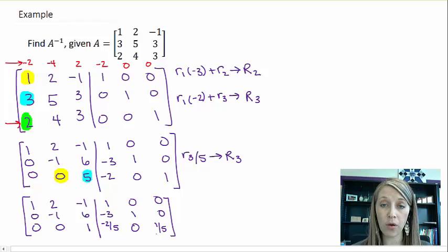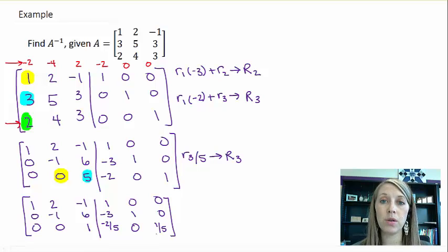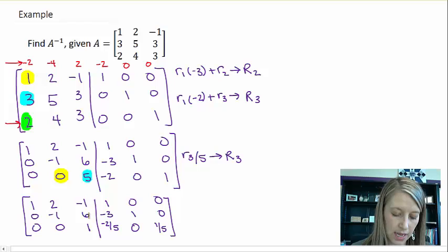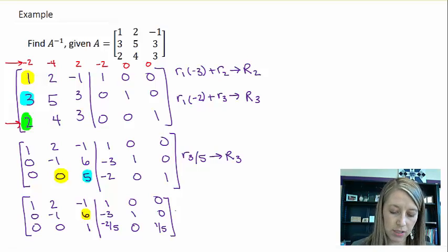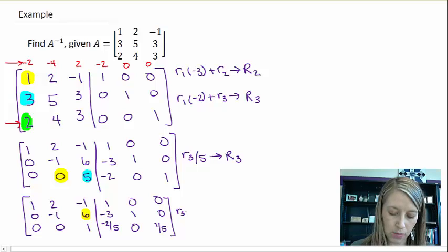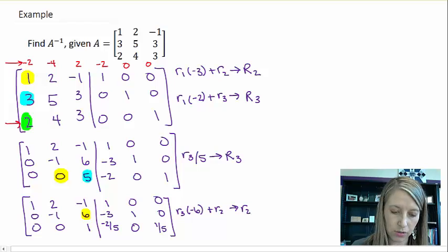And again, I get fractions, but unfortunately that is unavoidable. A lot of times when we do inverse matrices, we have fractions in our answer. The next thing that I want to do is to get a 0 where this 6 is. So I have to partner that up with row 3. So I'm going to take row 3 times negative 6. And I'm going to add that to row 2.